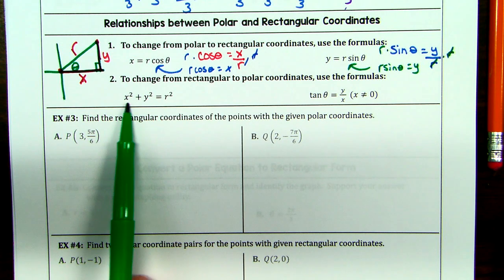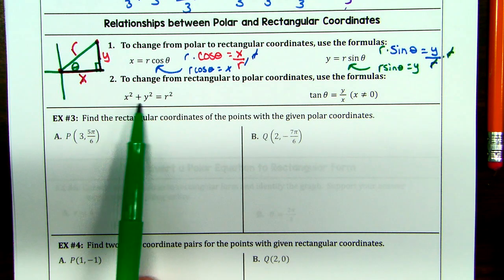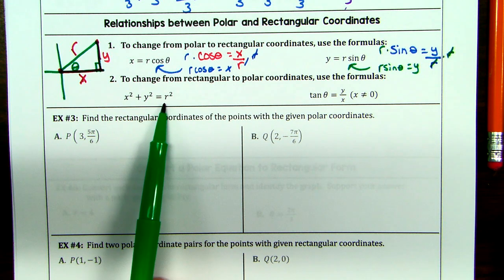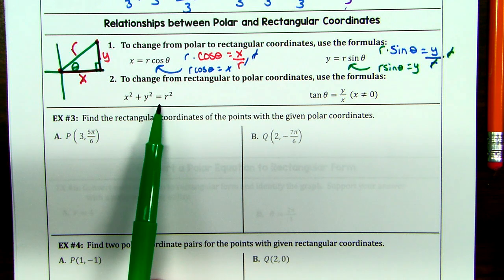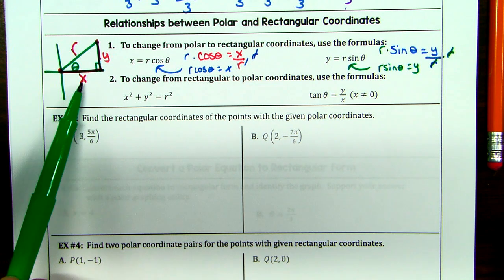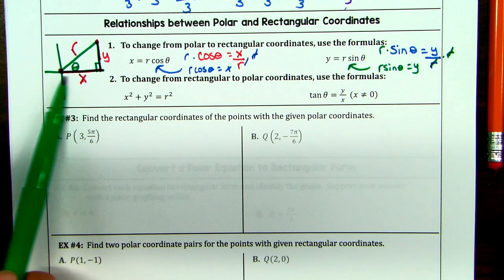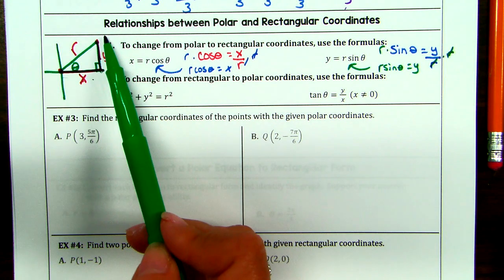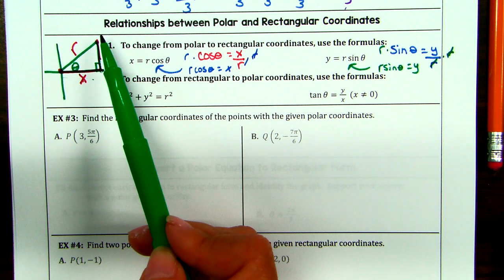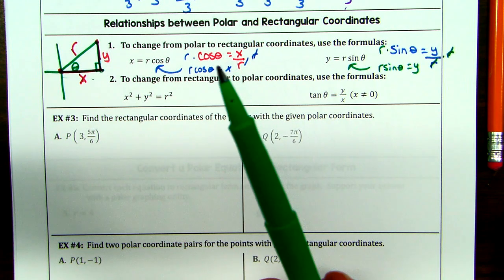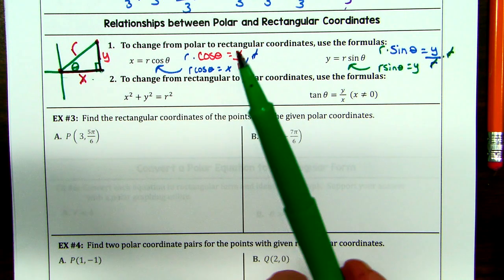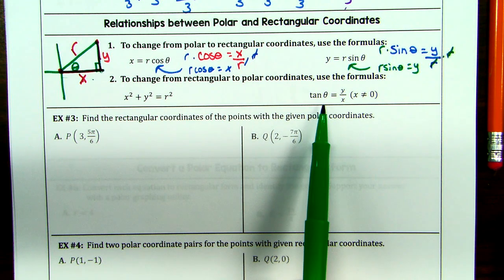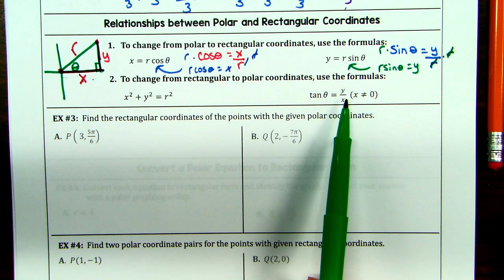X squared plus y squared equals r squared — that should give you Pythagorean theorem vibes. And tan is opposite over adjacent, also sine over cosine, so tan theta equals y over x.